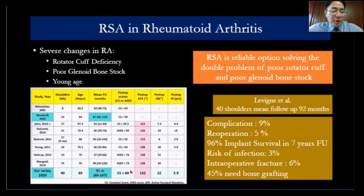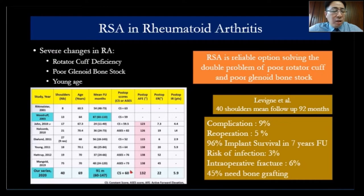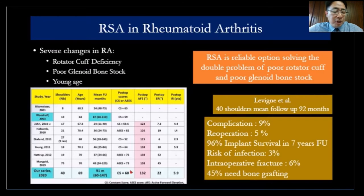Patient-specific instrumentation is quite useful, especially for complicated patients like revision surgery or fracture sequelae. In rheumatoid patients, it's quite challenging because the bone quality is soft, there's poor cuff quality, poor bone stock, and often a young and still active patient. The result in rheumatoid is not as good compared to primary osteoarthritis.